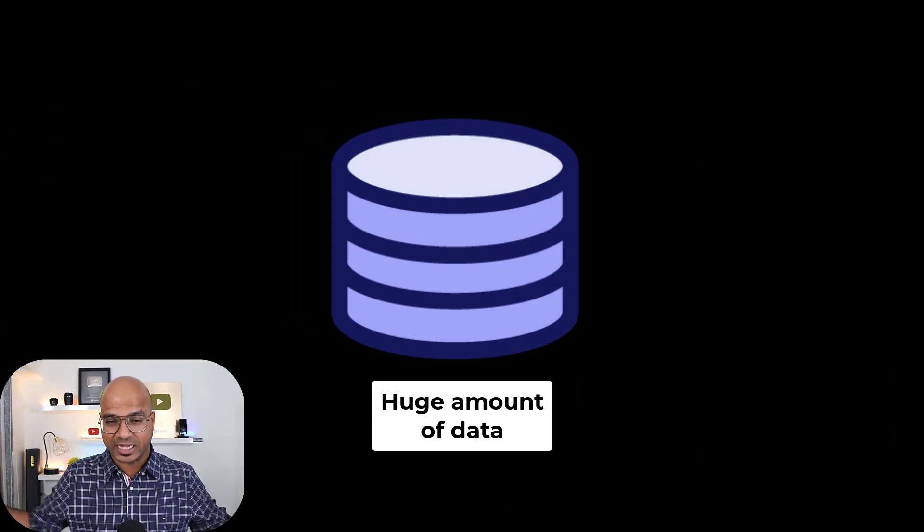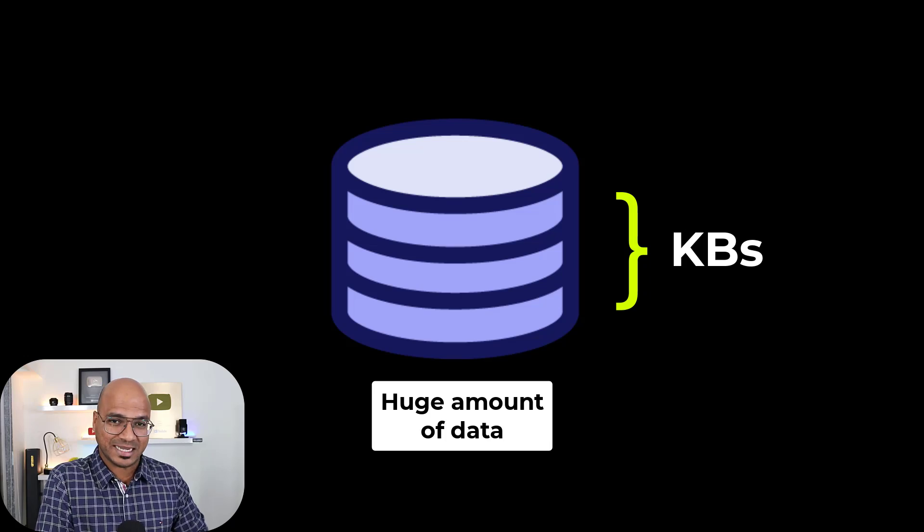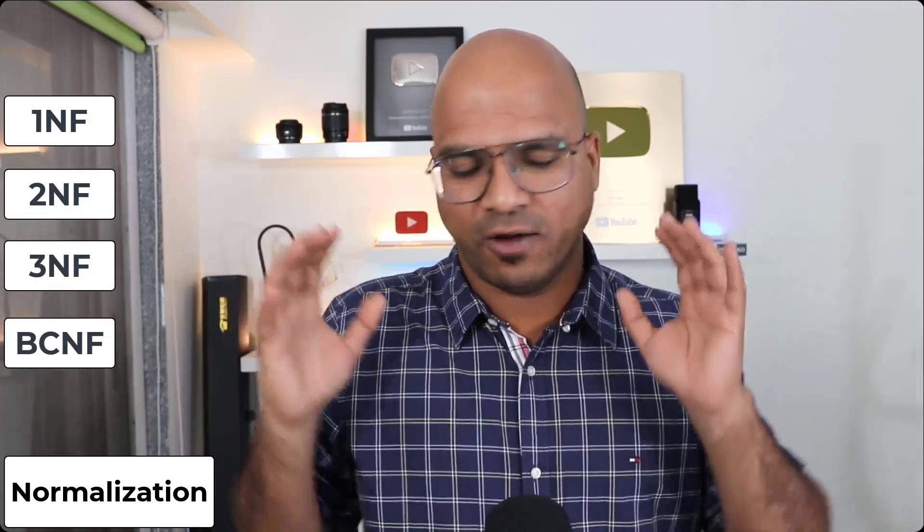Also, at that point, data storage was very costly. They were working with huge amounts of data measured in KBs and wanted to store it without waste. So they wanted to make sure every piece of data is stored properly with no — or at least minimum — duplication. For that they achieved something called normalization: 1NF, 2NF, 3NF, and BCNF. It's a huge topic, but it creates relations between tables with no duplication.